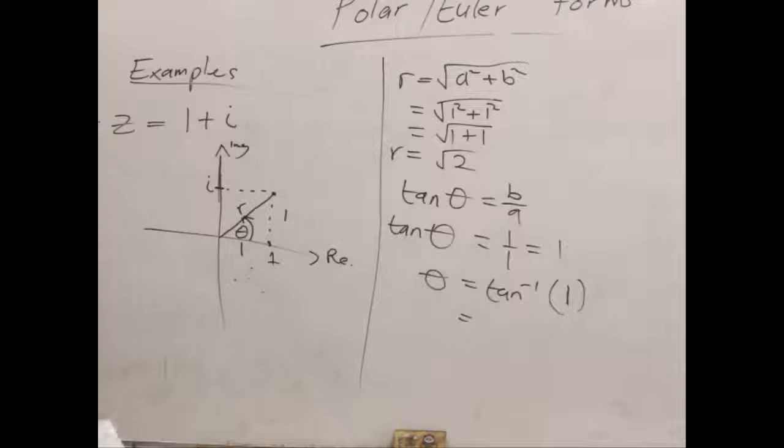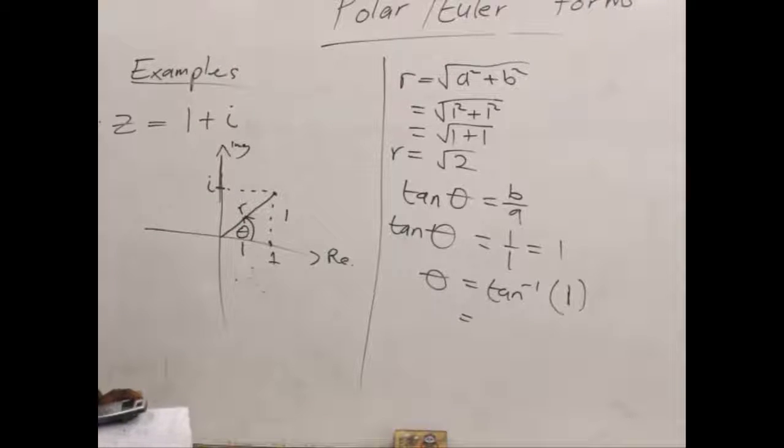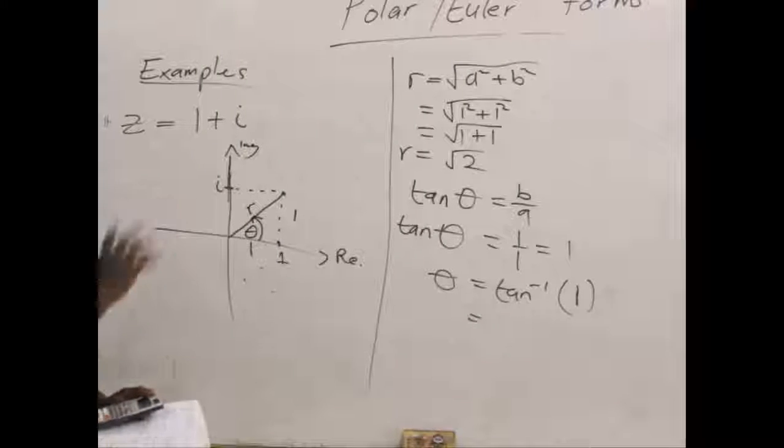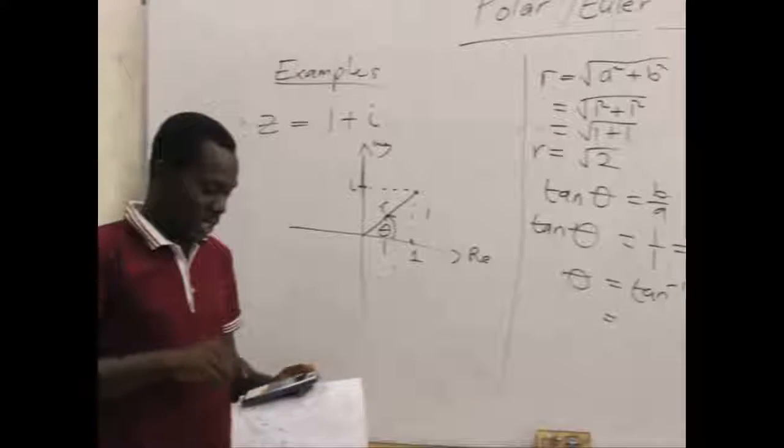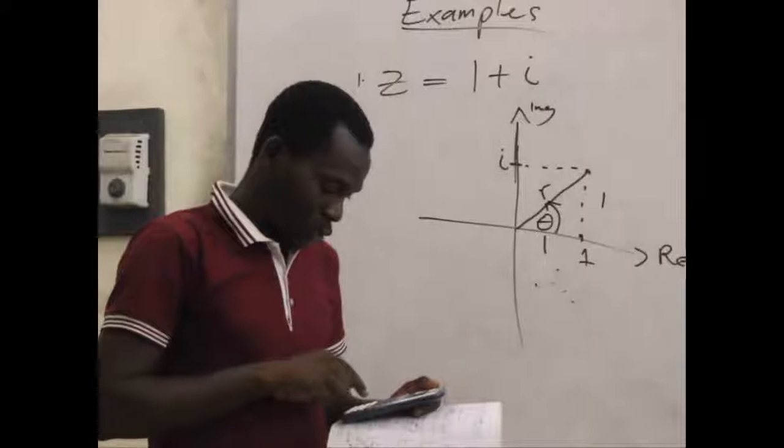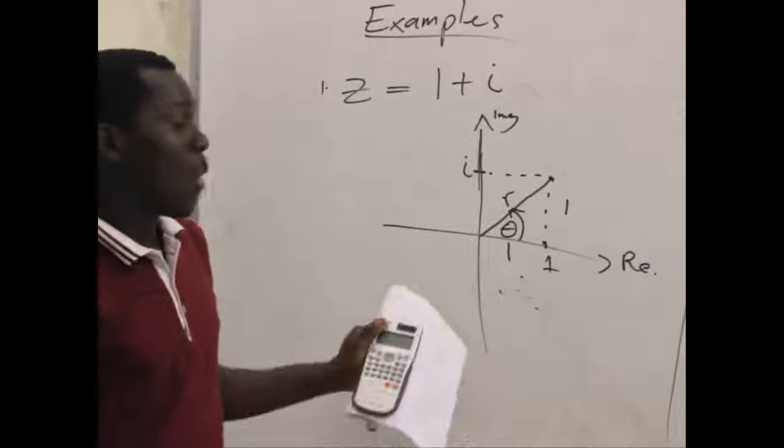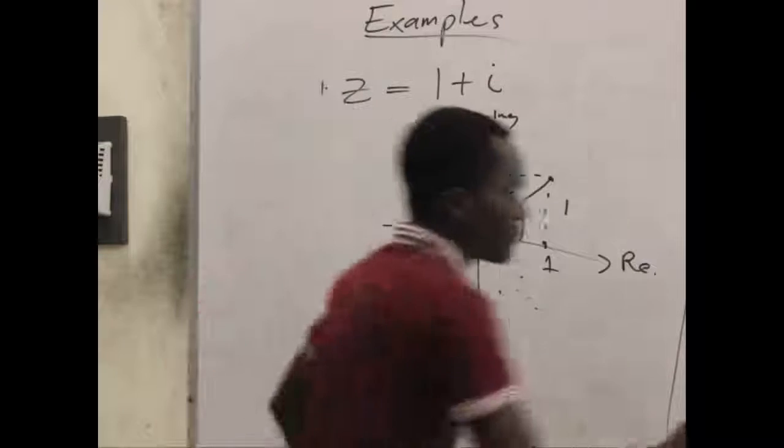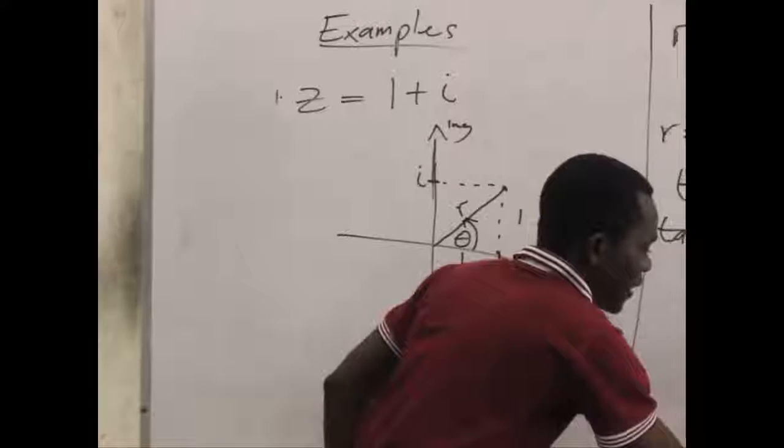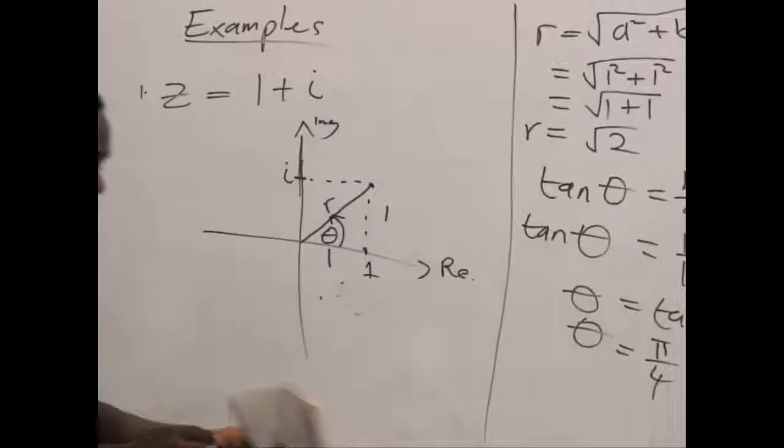And what should be tan inverse 1? We get our calculator and punch tan inverse of 1. But please don't forget, let your calculator be in radian mode because we always use radian angles in such computation. We don't use degrees, so always check that your angular mode is radian mode. So our tan inverse of 1 gives us one fourth of pi which is pi over 4. So our theta is pi over 4 in radians.